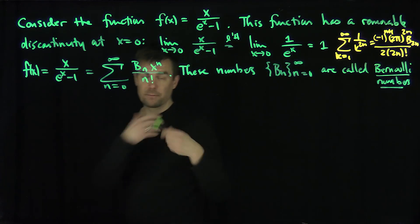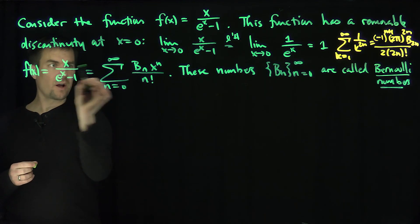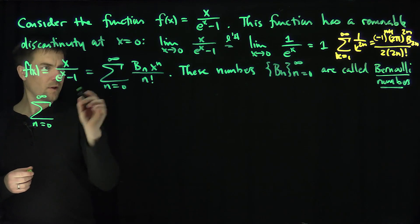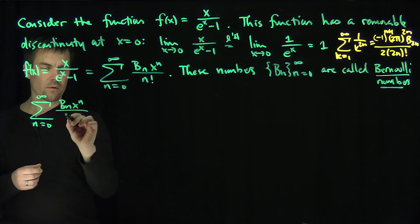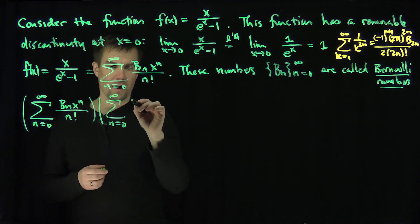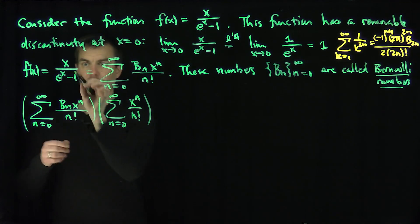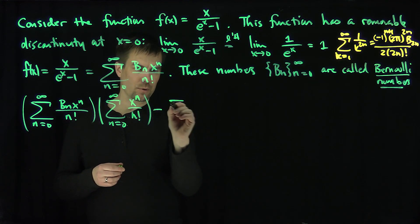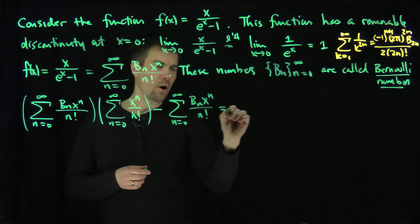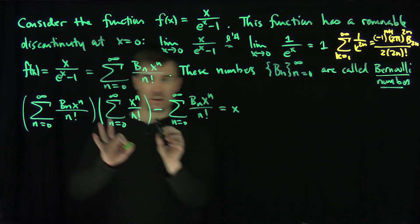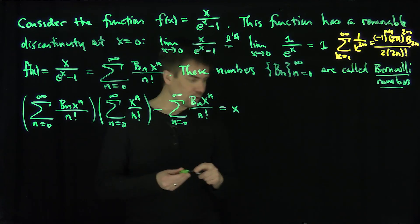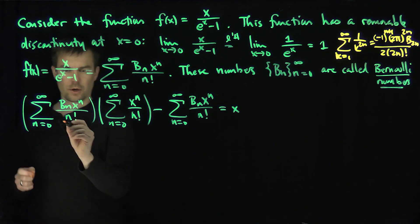Now I'm going to find some formulas for the Bernoulli numbers by multiplying the expression by e to the x minus 1. Doing so gives the sum from n=0 to infinity of b_n x^n over n factorial, times the Taylor series for e^x (sum of x^n over n factorial), minus the Bernoulli sum, all equal to x. On the left-hand side we have a Taylor expansion, and on the right-hand side also, so we can equate coefficients. We'll use the Cauchy product formula: the Cauchy product gives the sum from n=0 to infinity of the sum from k=0 to n of b_k over k factorial times 1 over (n−k) factorial, times x^n.